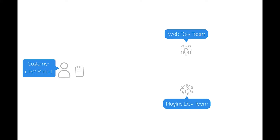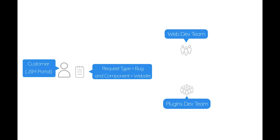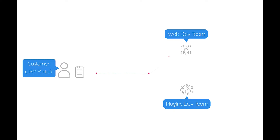For this use case, the customer will create a request from the JIRA Service Management portal. Based on the customer request type and component selected, JIRA automation will create a new ticket to the corresponding team that will resolve the ticket. The request type is bug and the component is website. JIRA automation will create a new development task in the web development's JIRA project since the component was set to website, and it will also link it to the original customer request.